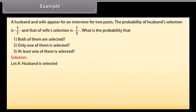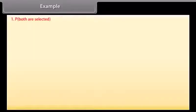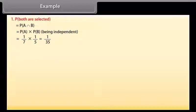Solution: Let event A be that the husband is selected, so P(A) = 1/7, and event B be that the wife is selected, so P(B) = 1/5. (1) P(both selected) = P(A∩B) = P(A)·P(B) = (1/7)·(1/5) = 1/35.